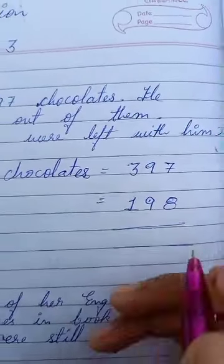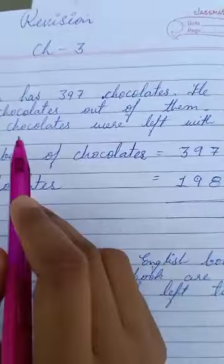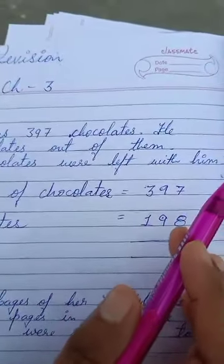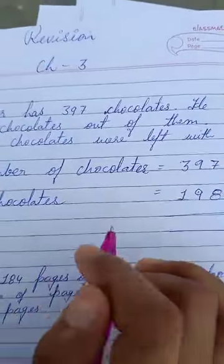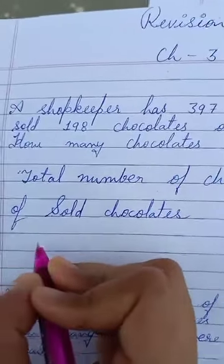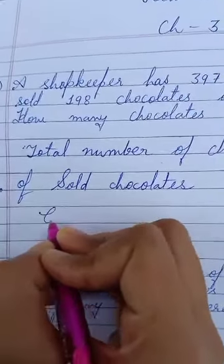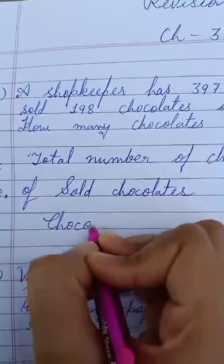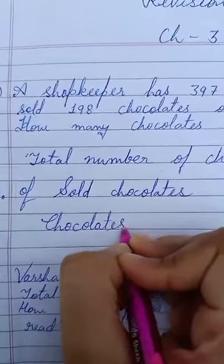Sold means to sell. How many did he sell? 198. So we have to find the answer - how many chocolates were left with him? So left chocolates or chocolates left.